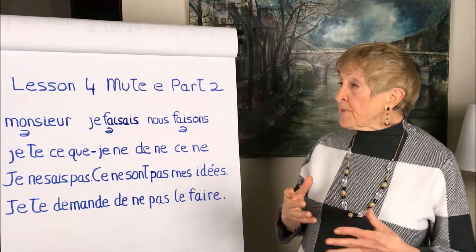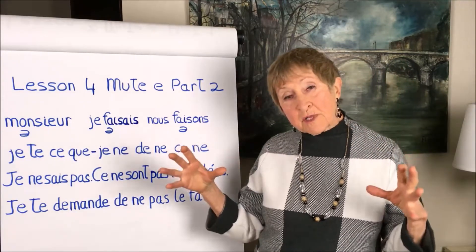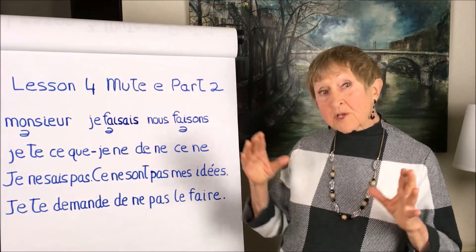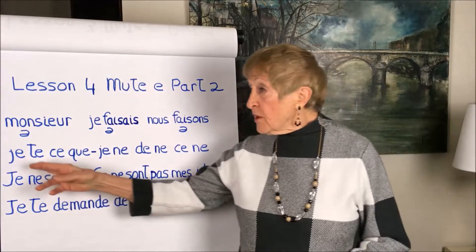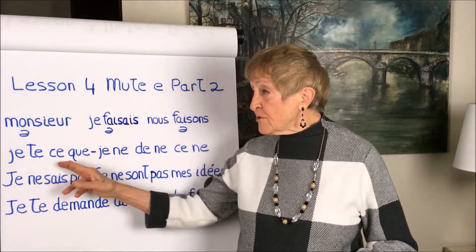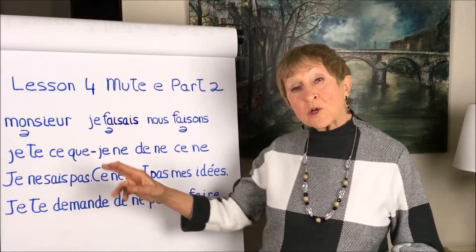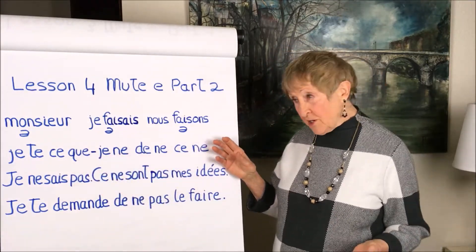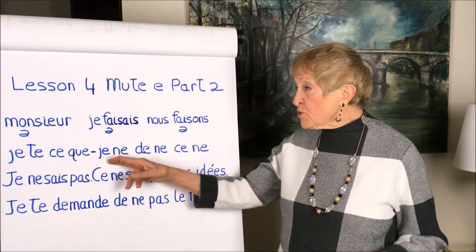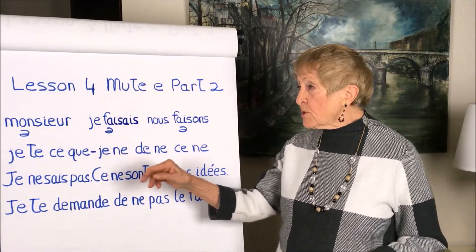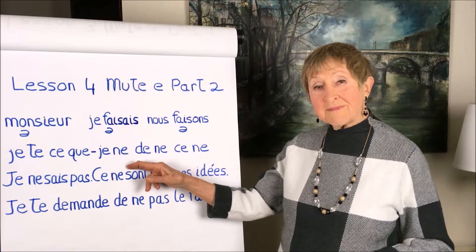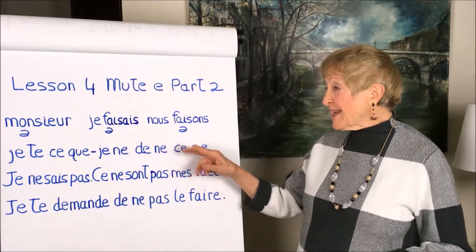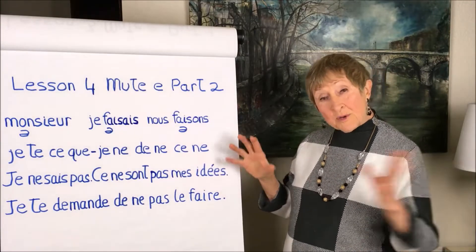In the last lesson we saw that certain combinations of little mute-e's in one-syllable words are always going to get pronounced that way. We saw that je, te, and ce que are always going to be pronounced 'sht' and 'sq.' But there are a few others in that series: when you have je and ne together it's always going to be pronounced 'jeûne,' and when you have de and ne, it's always going to be 'dune.'